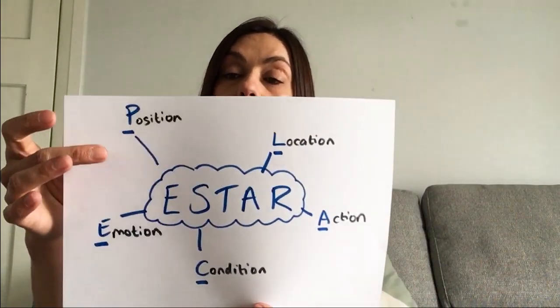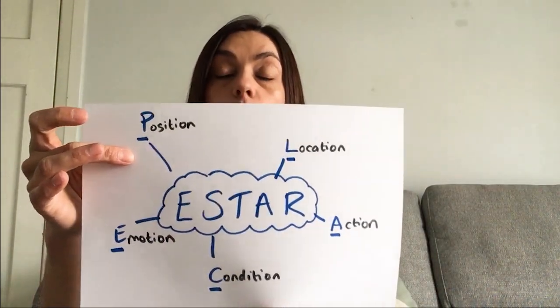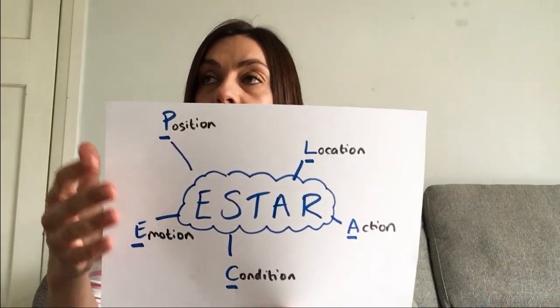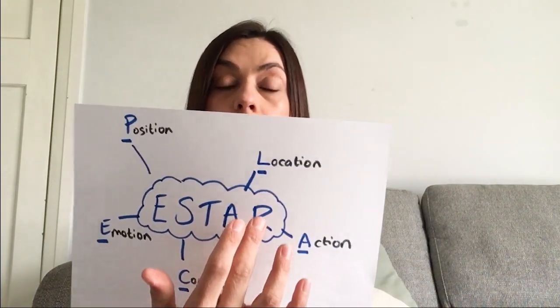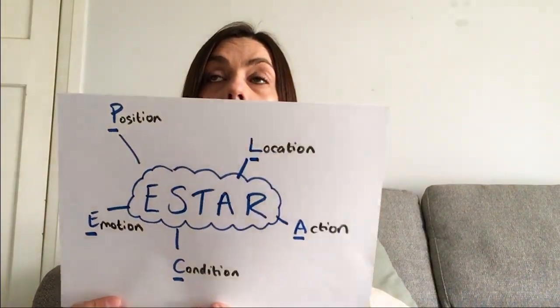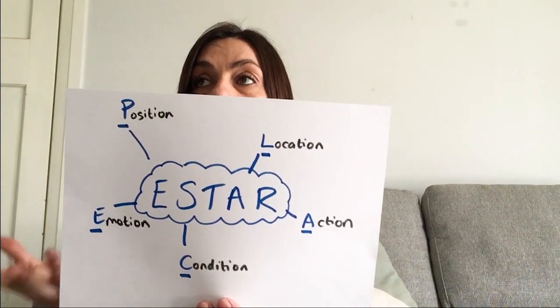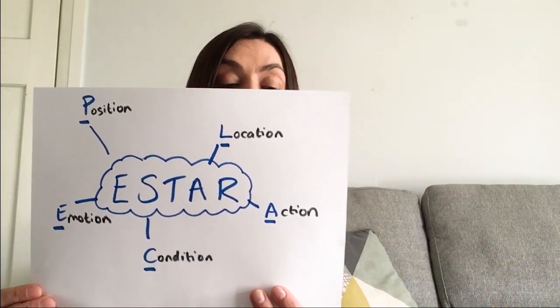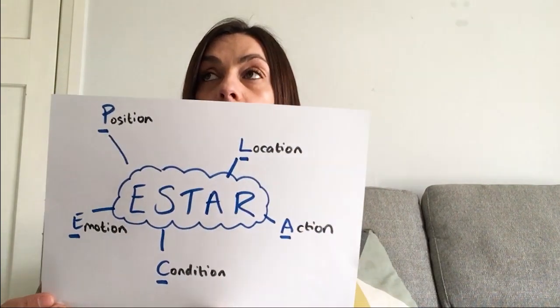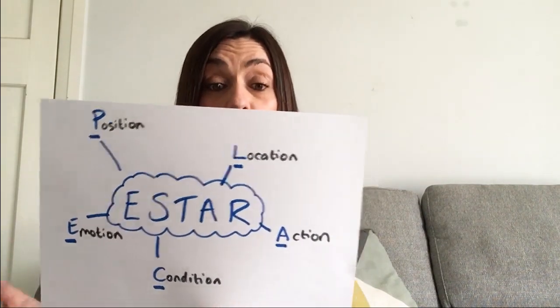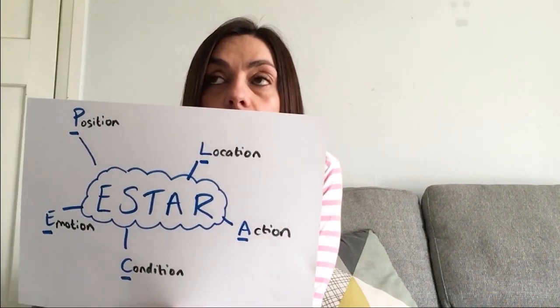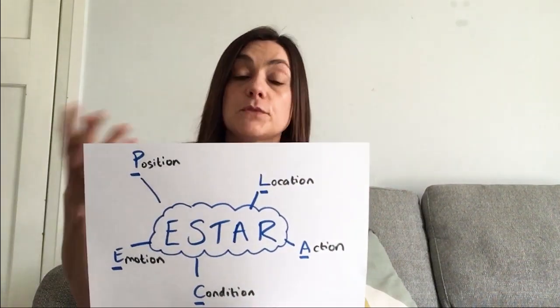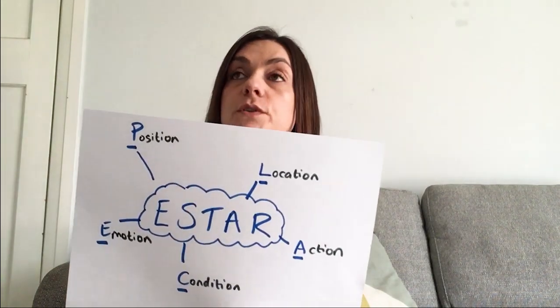So the uses of estar are as follows. Position — where an object is, for example 'the flower pot is on the table.' Location — where something is located, so 'my house is in Bristol' or 'the student is in the class.' Action — if I'm doing something right now, so 'I'm talking' or 'I'm sitting,' you would use estar for that.